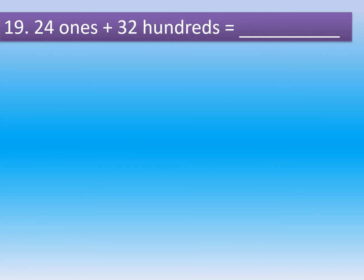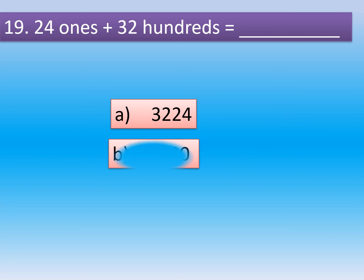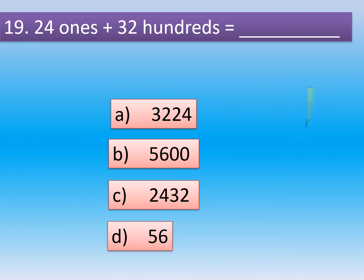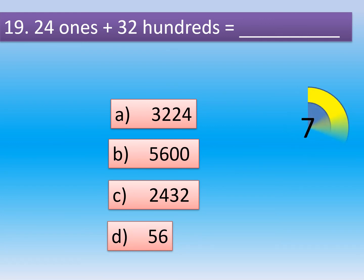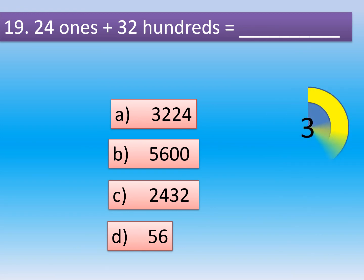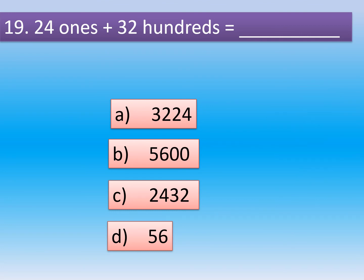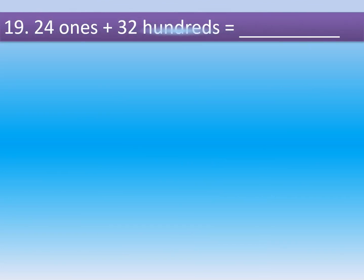Question number 19. 24 ones plus 32 hundreds is equal to dash. Option A: 3,224. Option B: 5,600. Option C: 2432. Option D: 56. The correct option is Option A: 3,224.